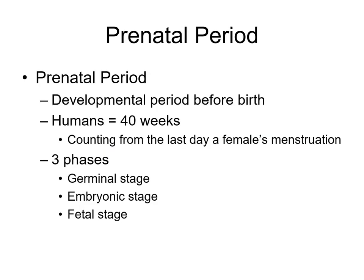We'll now speak about the prenatal period — the developmental period before birth. For humans this is 40 weeks, so not exactly nine months, it's actually a little longer. We count those 40 weeks starting from the last day of the woman's menstruation. We will look at three phases: germinal, embryonic, and fetal.